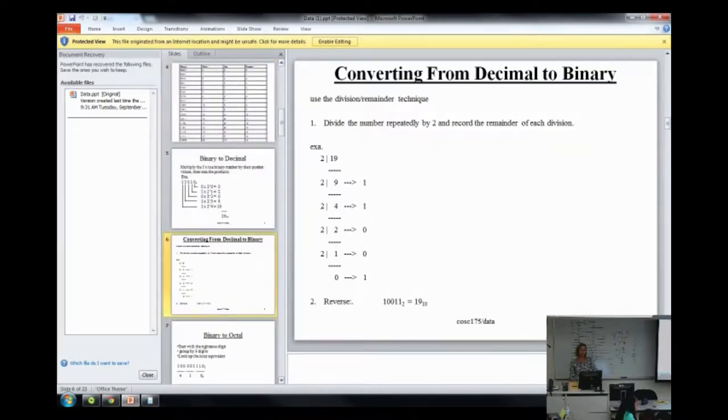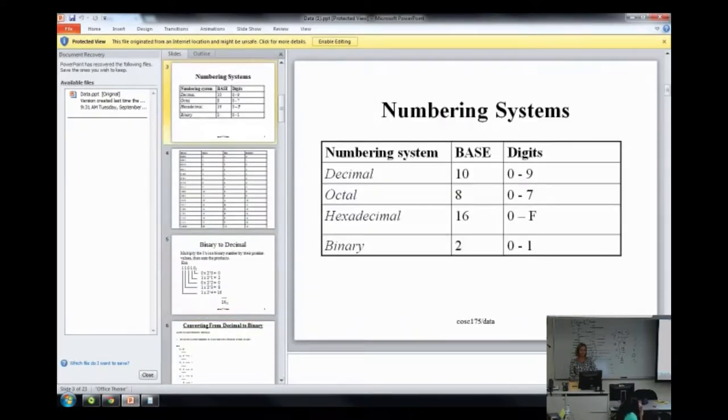The next numbering system we're going to talk about is called the octal numbering system. And octal is base 8. And what are the possible digits in octal? 0 to 7.